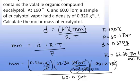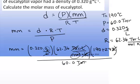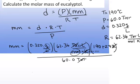which is the correct unit for molar mass. Doing the calculation gives a molar mass of 154 grams per mole for eucalyptol.